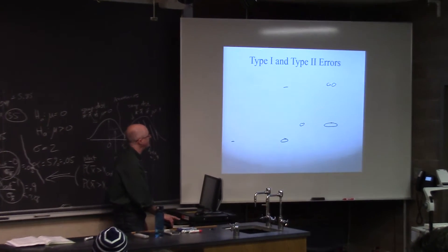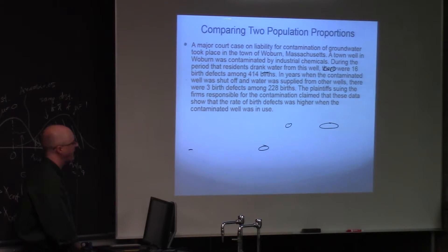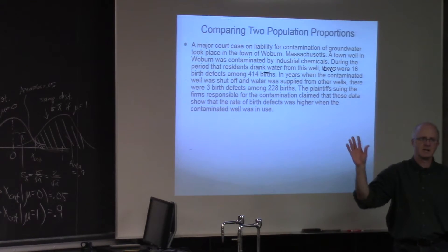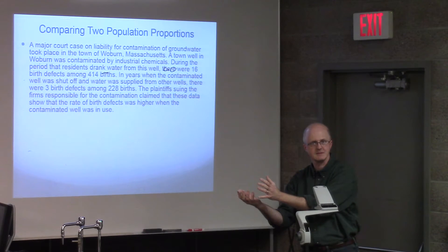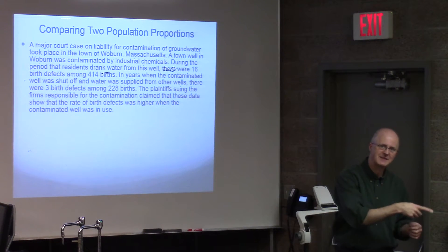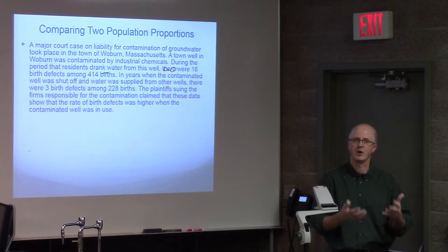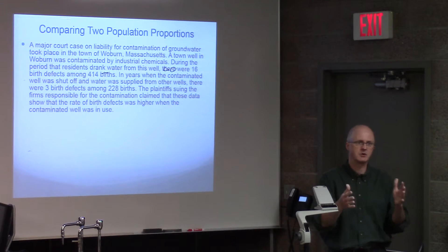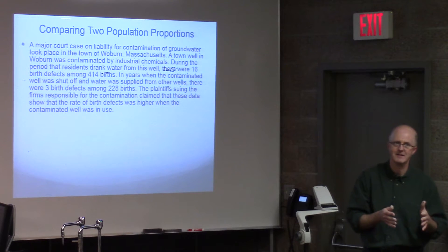Let's do a section 8.2 problem: comparing two population proportions. For section 8.2, the big picture is you've got two populations and two population proportions you'd like to compare — just like in chapter 7 we compared two population means. We could do confidence intervals or hypothesis testing. Hypothesis testing in section 8.2 is a little extra tricky, and for the sake of time we're only going to do the confidence interval today — that's all you're responsible for from section 8.2 on the test.